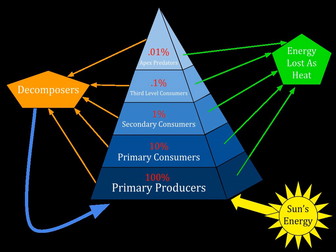A pyramid of productivity is often more useful, showing the production or turnover — the rate at which energy or mass is transferred from one trophic level to the next — of biomass at each trophic level. Instead of showing a single snapshot in time, productivity pyramids show the flow of energy through the food chain. Typical units are grams per meter squared per year or calories per meter squared per year. This graph shows producers at the bottom and higher trophic levels on top. When an ecosystem is healthy, this graph produces a standard ecological pyramid.